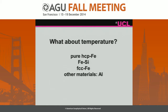Then we thought about temperature. Previous calculations done at 5,000 to 6,000 Kelvin — which we think the inner core temperature might be — are only about 85% of the melting temperature of the simulation box, because simulations tend to overestimate melting by about 20%. So we decided to jack up the temperature a bit and see what happens.